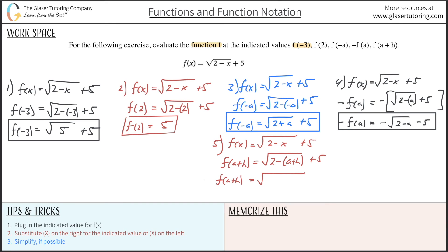So we'll just distribute the negative sign. So it's 2 minus a minus h. And then just plus 5. And there's nothing else I can do there in terms of simplification. And that is that.